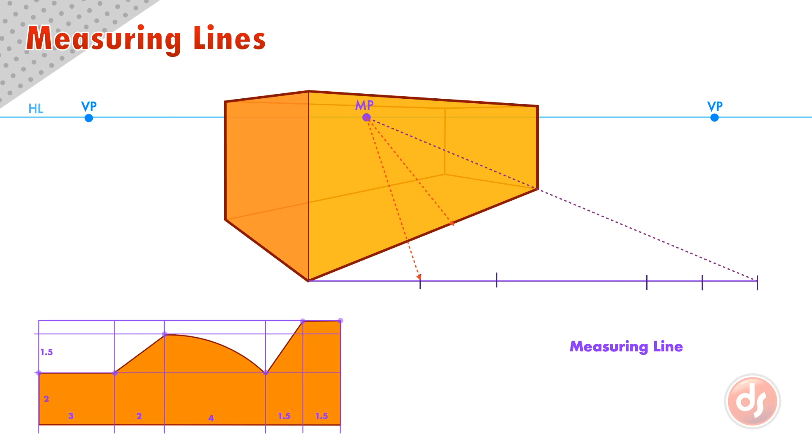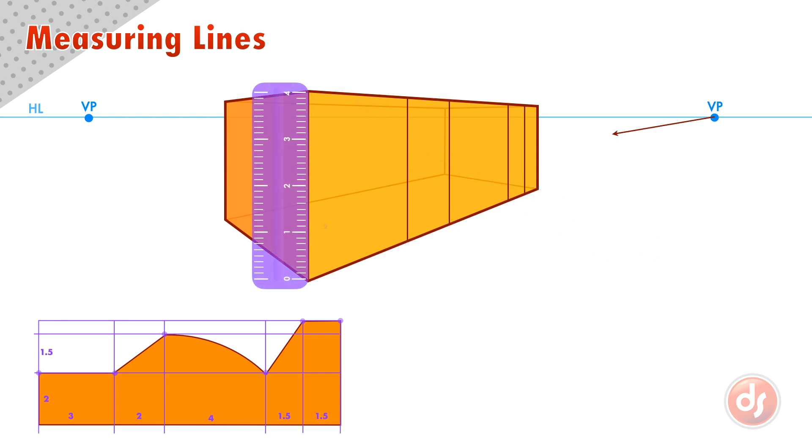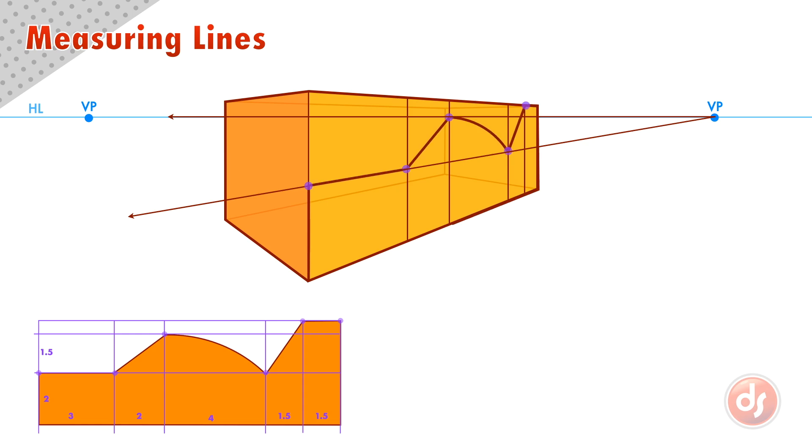From the measuring point we draw lines back through the box to our measuring line. Now we have the horizontal divisions on our perspective box. We can divide the left edge of the box to get the vertical divisions. Then we mark those same points as our reference. And now we can connect the dots with a line that accurately gives us our reference shape.